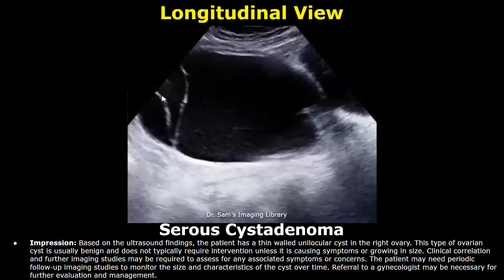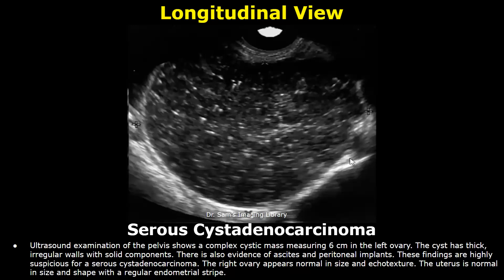This report is of a malignant case, serous cystadenocarcinoma. In the findings you can write: a complex cystic mass, then its measurement and location. The cyst has thick irregular walls with solid components. There is also evidence of ascites and peritoneal implants. Such findings are highly suspicious for serous cystadenocarcinoma.